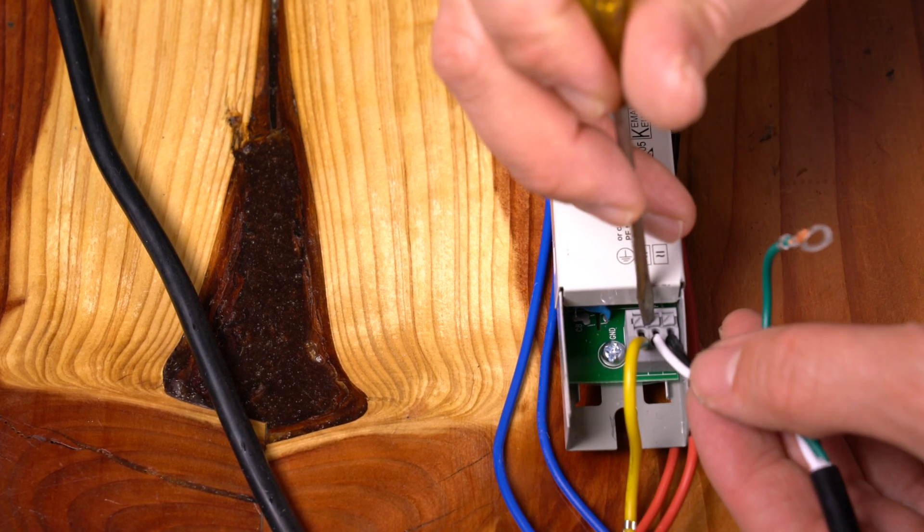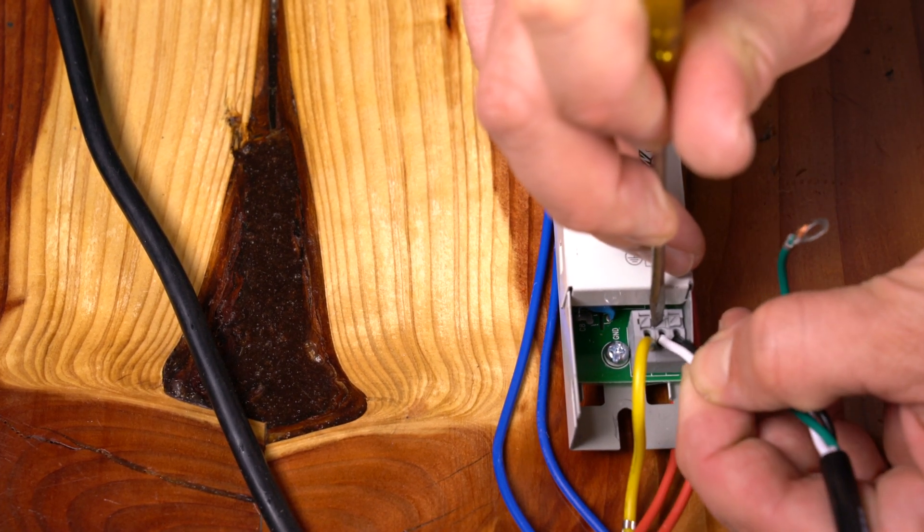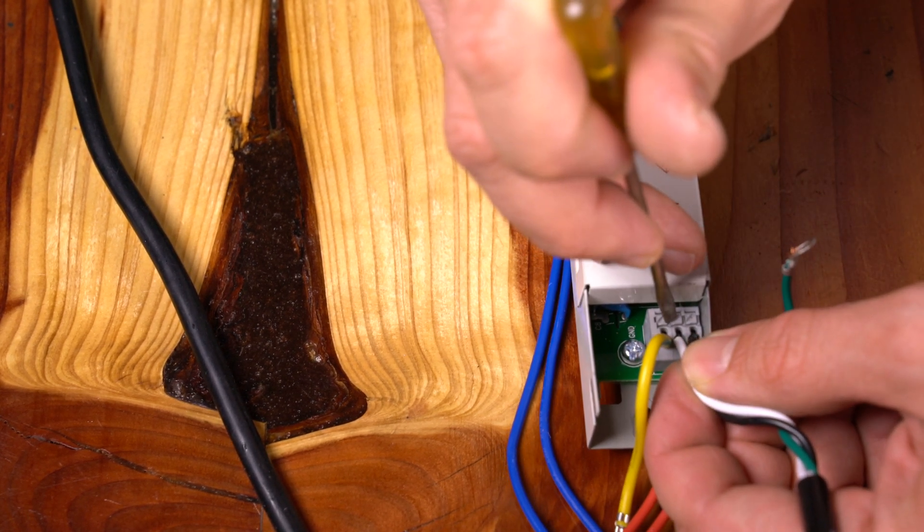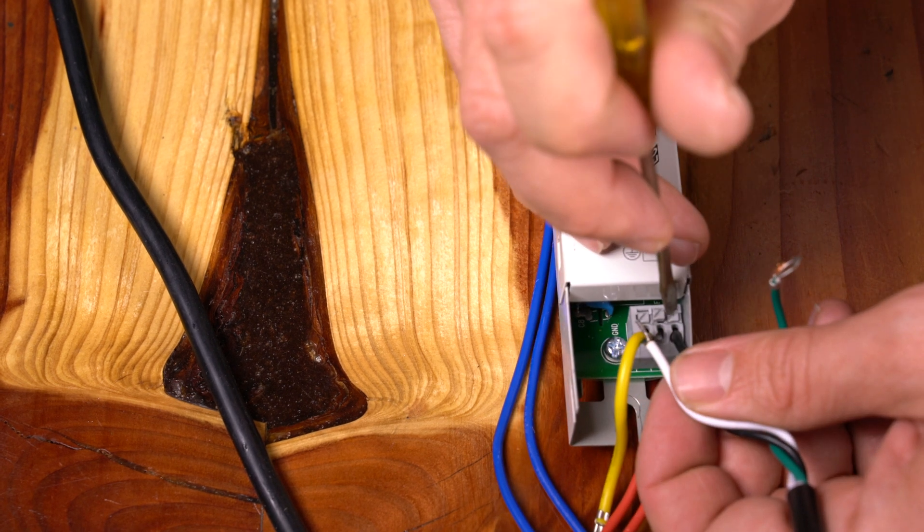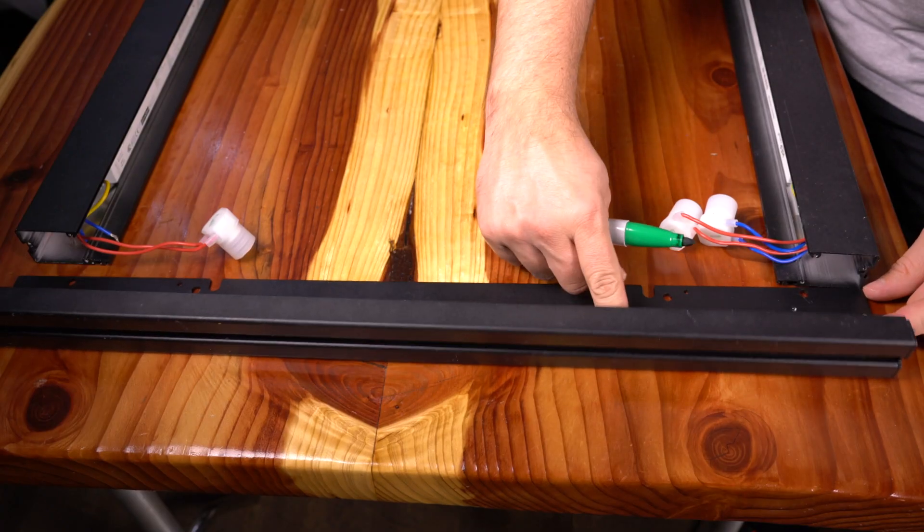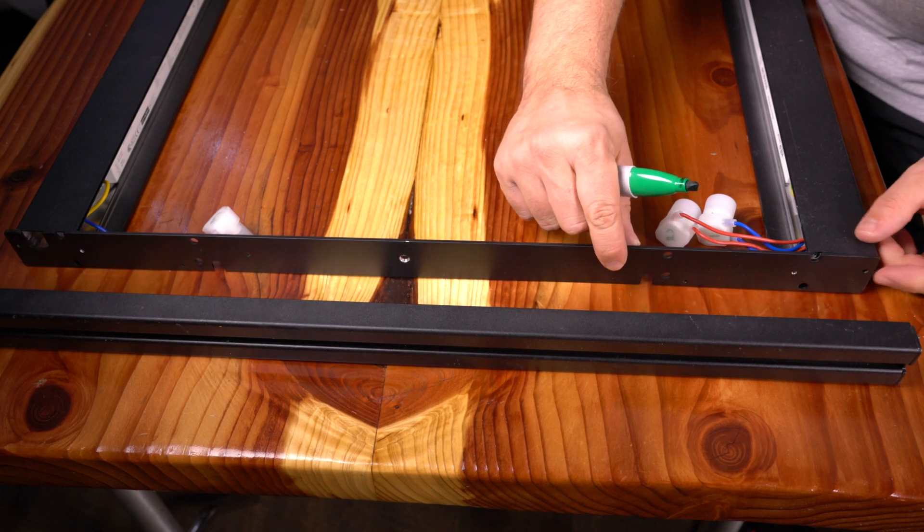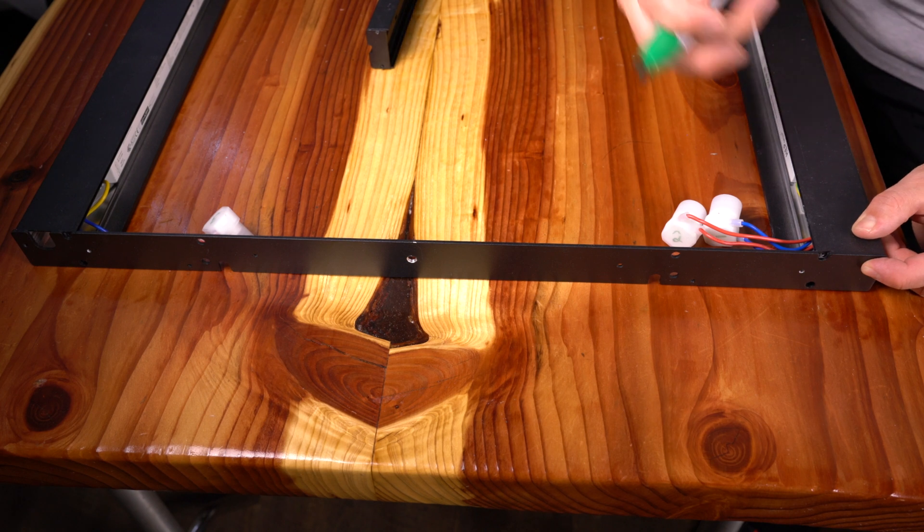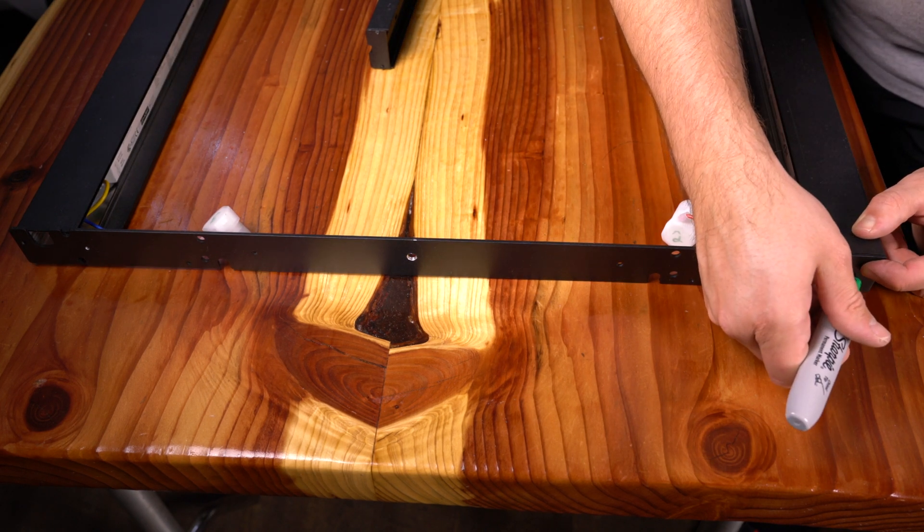Since I'm going to have to pass the power cord back through the end caps, I'm removing the power cords from the actual ballast. All you have to do is just pop down those little buttons and the wires come right out. Now I just want to get a general idea of where I'm going to have to drill the structural pieces here.